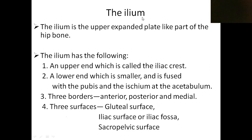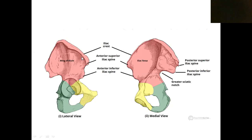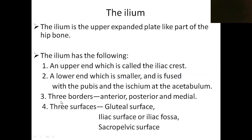Now we are going to see the ilium in detail. It is the upper expanded portion of the hip bone. The ilium has two ends: upper end and lower end; three borders: anterior, posterior, and medial border; and three surfaces: gluteal surface, iliac surface or iliac fossa, and sacropelvic surface.